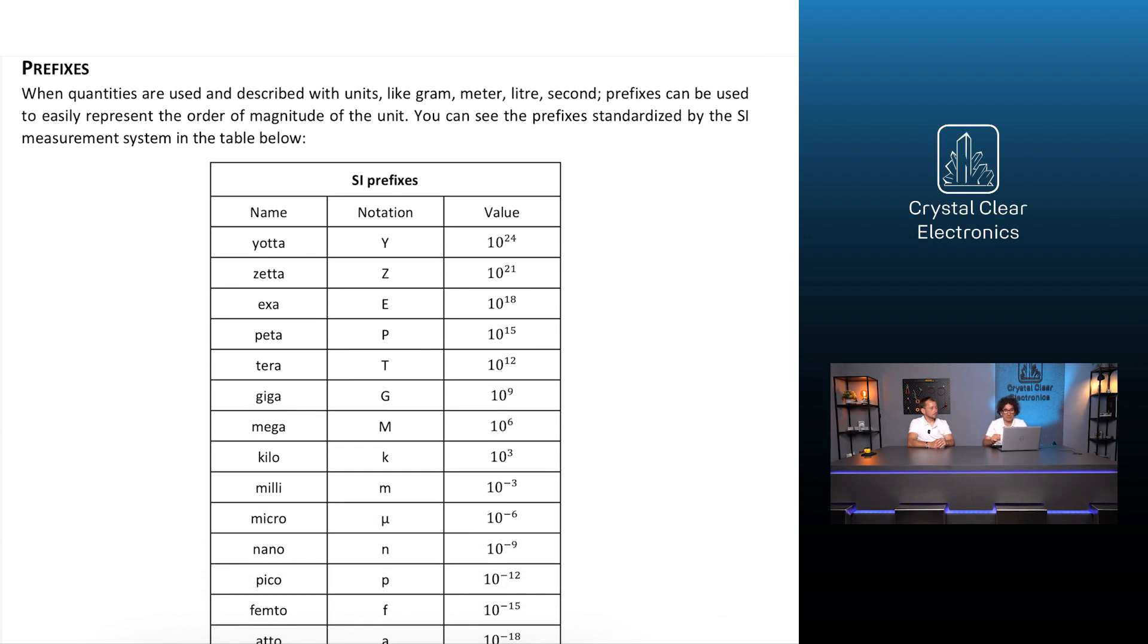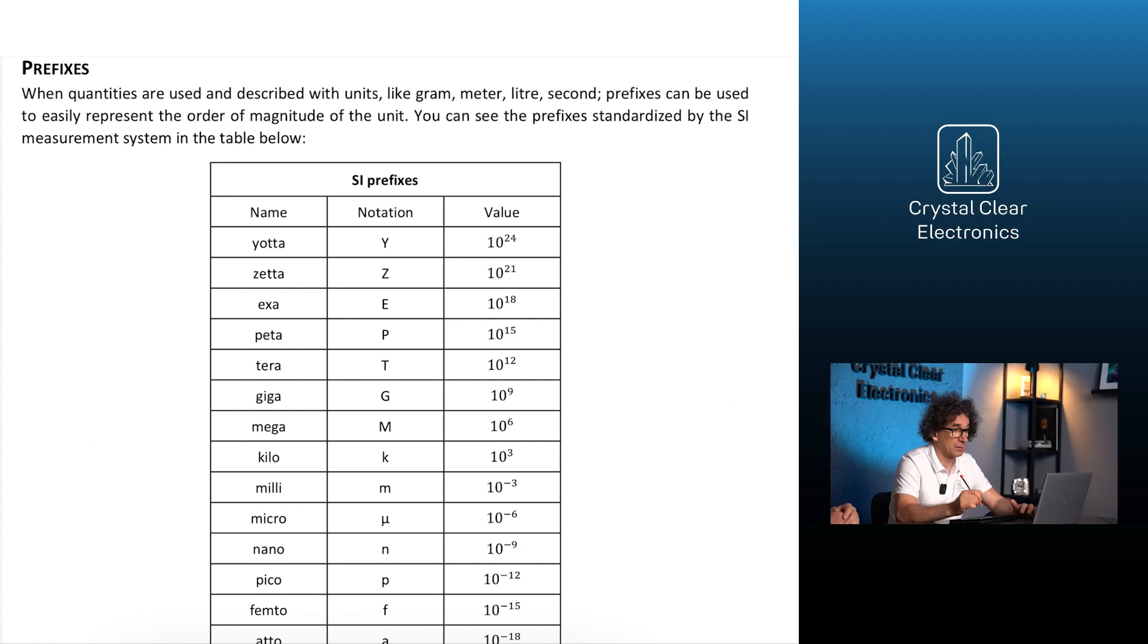For quantities with units of measurement, we can also use the prefix corresponding to the powers of 10. In the SI system of units, these are recorded between 10 to the negative 24 and 10 to the 24th divisible by 3.